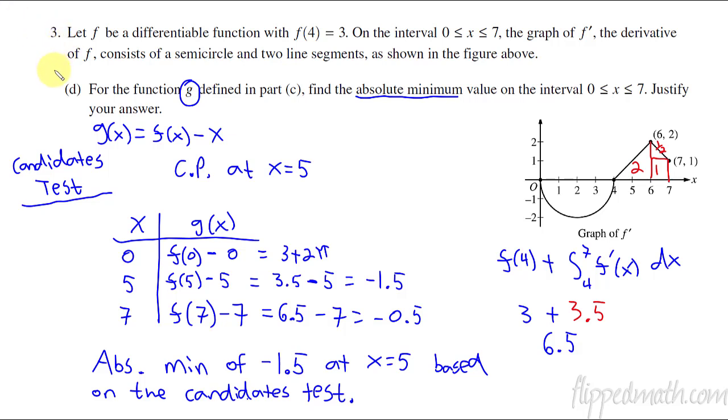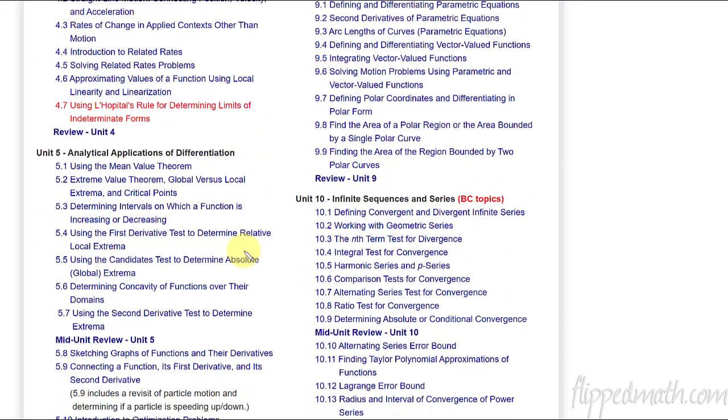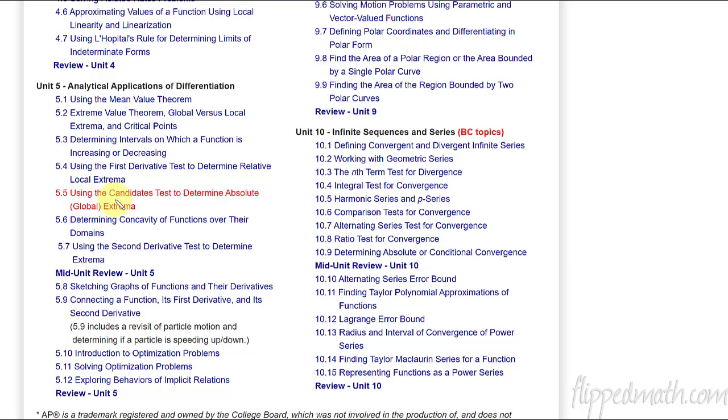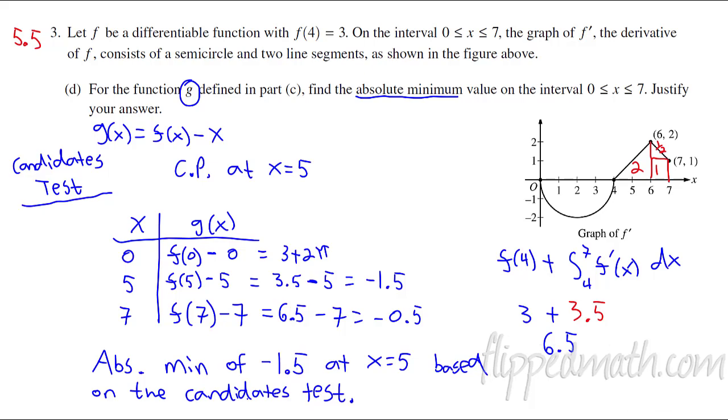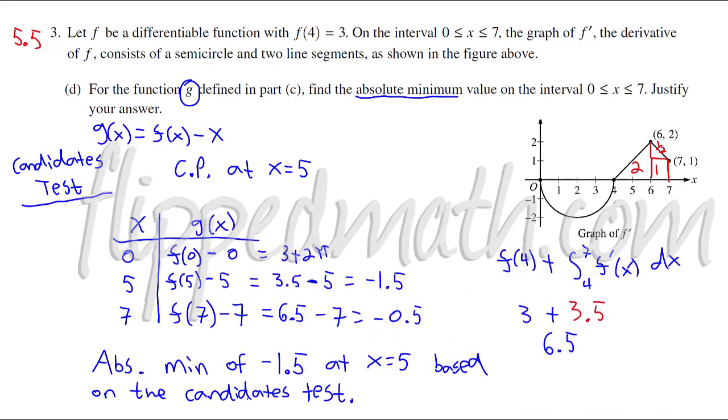And the candidates test was lesson 5.5. If you need to review that one, you can look on flip math. We've got the 5.5 right down there. There it is. Candidates test to determine absolute value of global extrema. All right, hopefully that was helpful. This is Mr. Bean signing off.